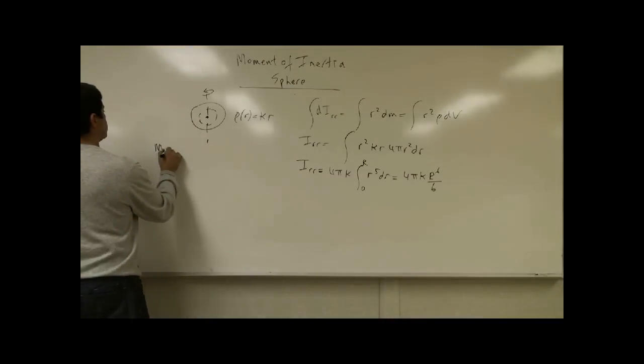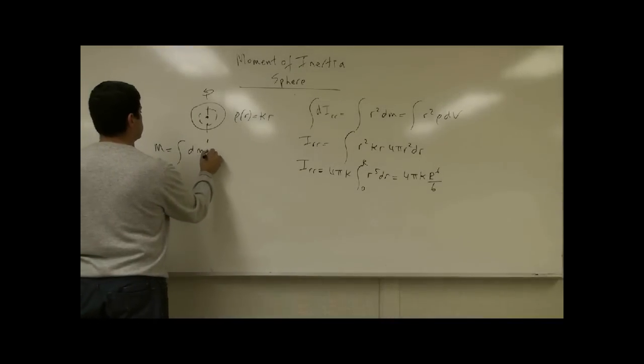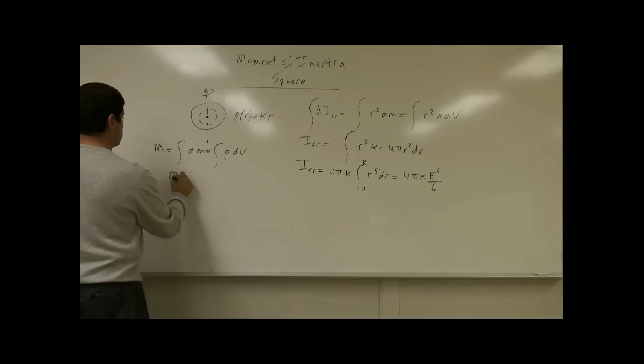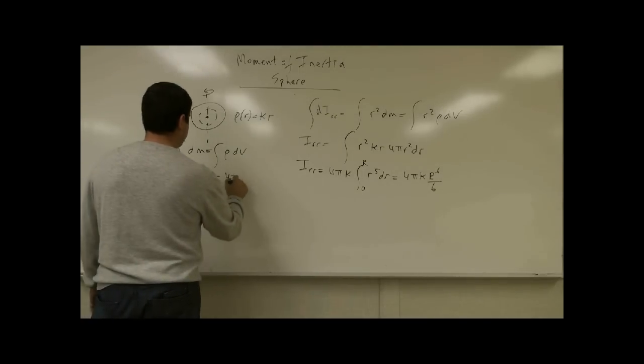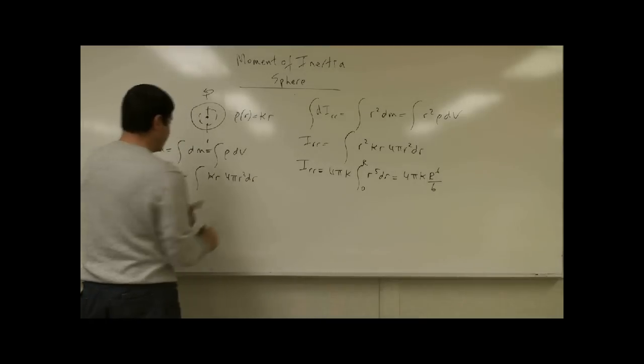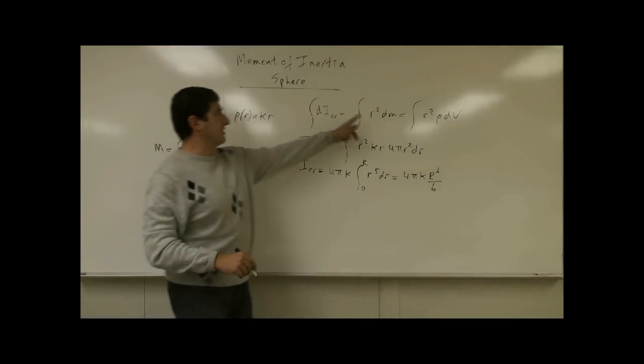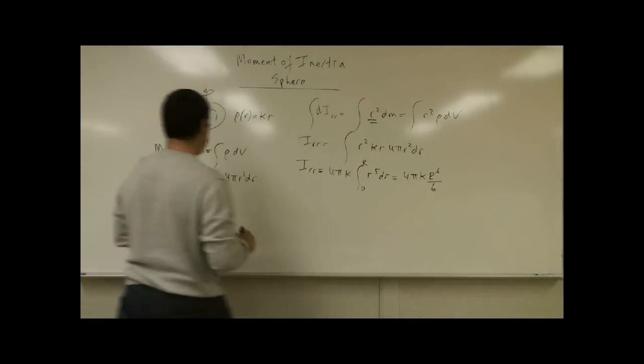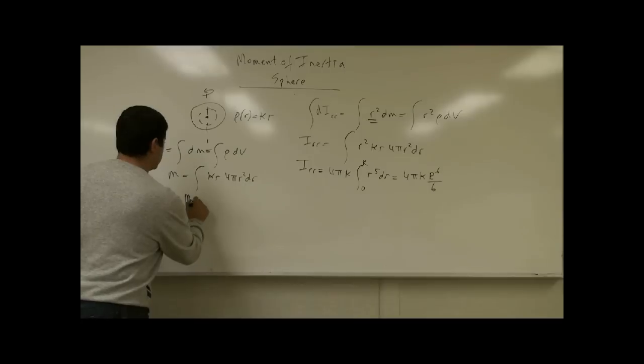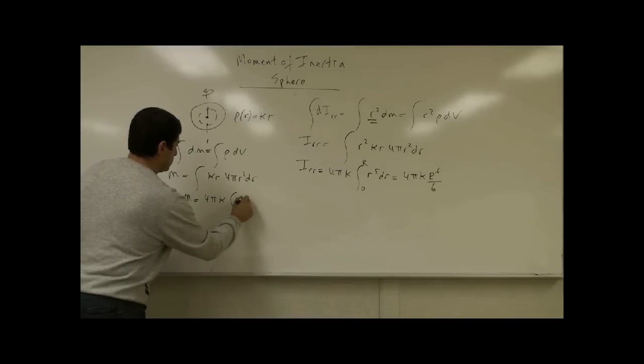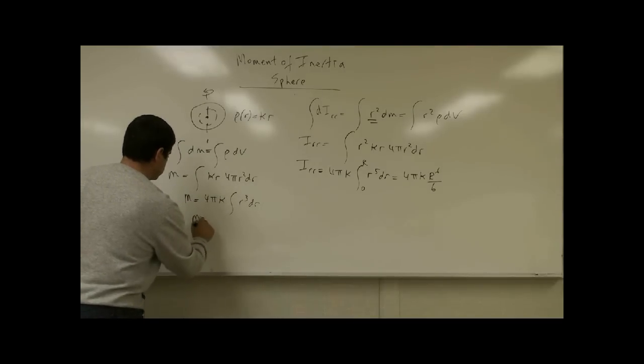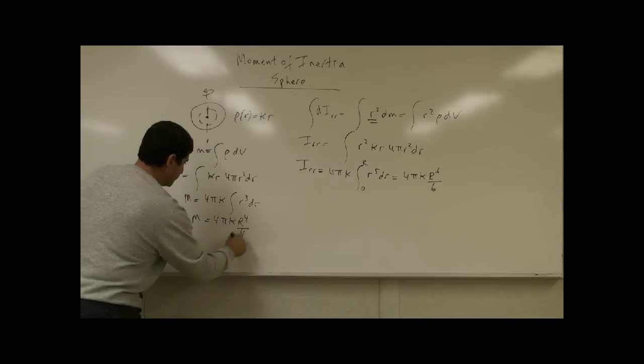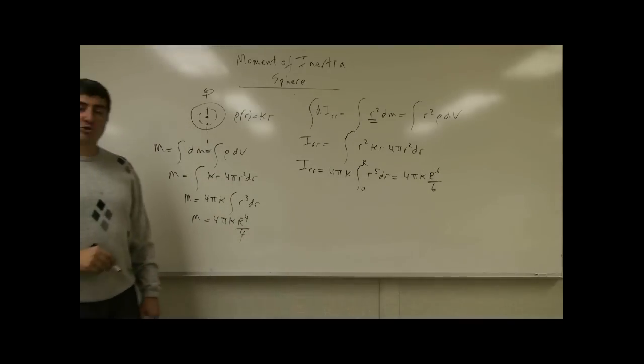So I have m is equal to integral dm, rho dv, kappa r, 4 pi r squared dr. Again, the only thing different here between this integral and that integral is that this is missing the r squared. So again you have m equal 4 pi kappa r to the 4th over 4.